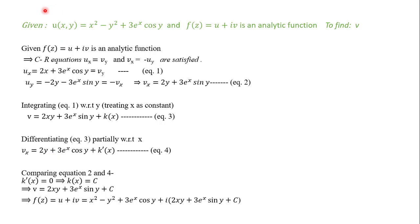Since f(z) is analytic, the CR equations must be satisfied: u_x = v_y and v_x = -u_y. So u_x, the derivative of u with respect to x, is 2x + 3e^x cos(y). Using the CR equation, this equals v_y — call this equation 1.